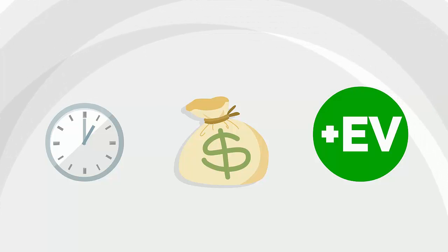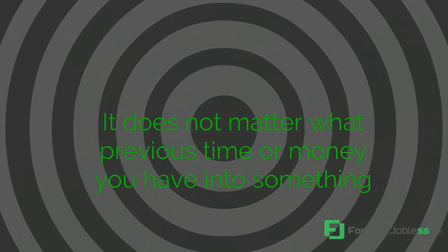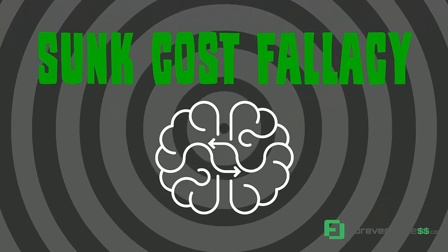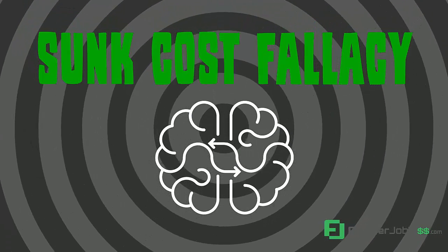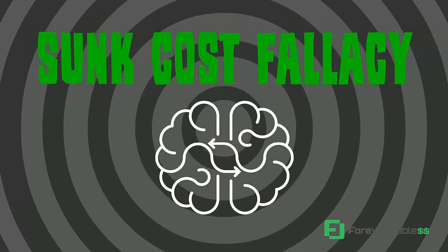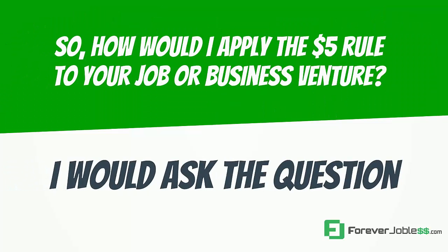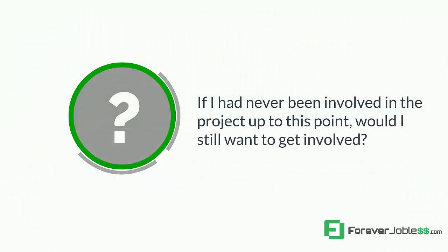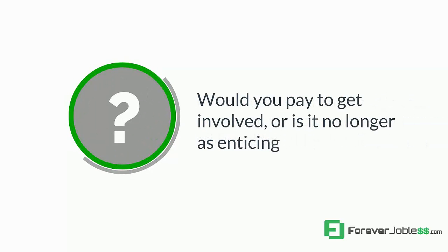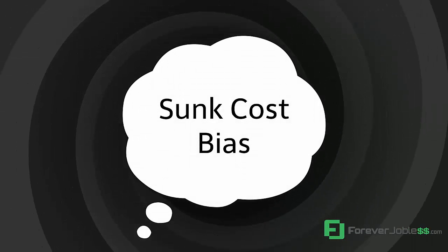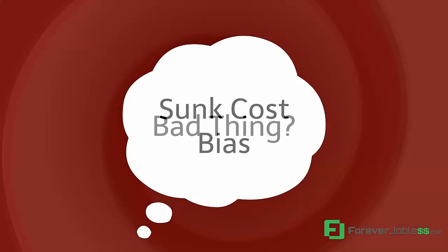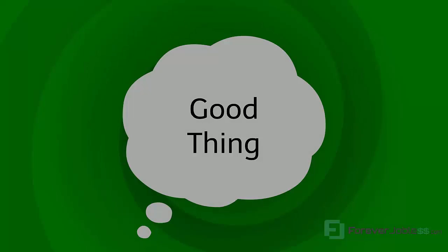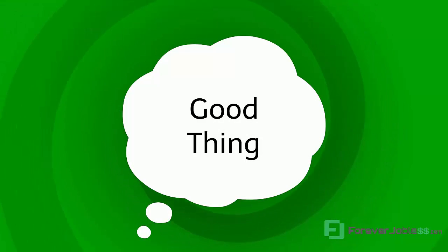Always make the plus EV decision. If you're an entrepreneur, it's the same for your business venture — it does not matter what previous time or money you have into something. The sunk cost fallacy will only confuse your thinking in a way that leads you to less profits or less happiness. How would I apply the $5 rule to your job or business venture? I would ask this question: if I'd never been involved in the project up to this point, would I still want to get involved? Would you pay to get involved? Or is it no longer as enticing when you've eliminated sunk cost bias from your thought process? You'll find it's often lost its appeal — and that shouldn't be viewed as a bad thing. It's a good thing because sunk cost fallacy was influencing your decision. With the sunk cost bias eliminated, it will allow for more clarity as to what you should actually be doing.